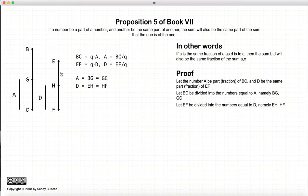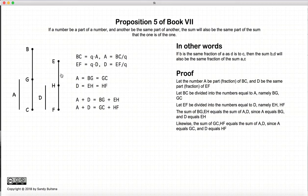Now, if we add a plus d, since bg and eh are equal. So, bg is equal to a, eh is equal to d. So, a plus d is equal to bg plus eh. a plus d is also equal to gc plus hf.